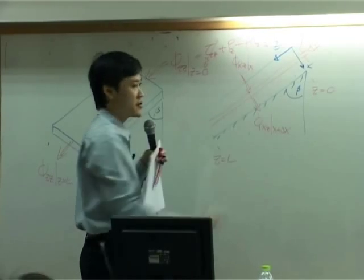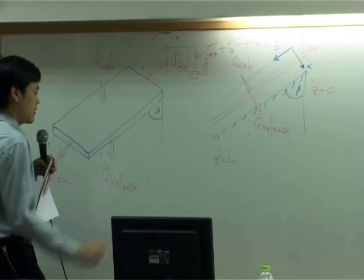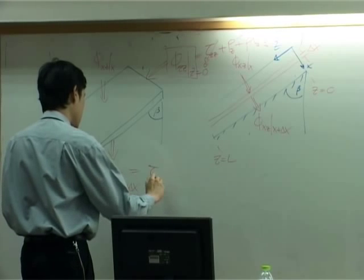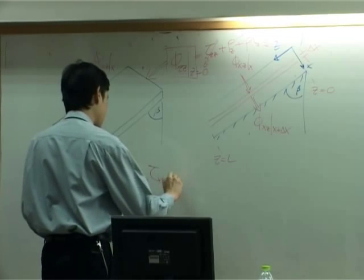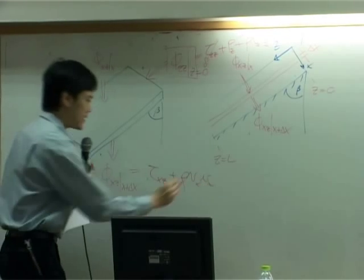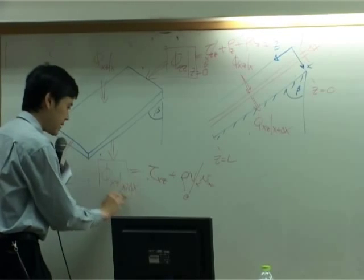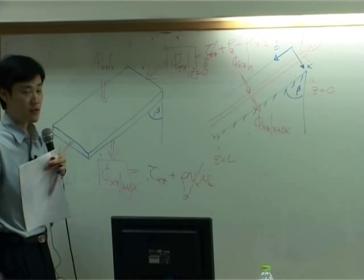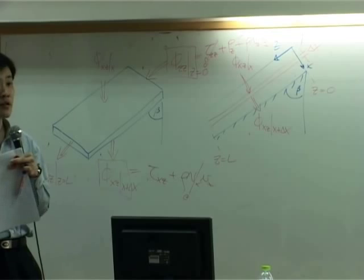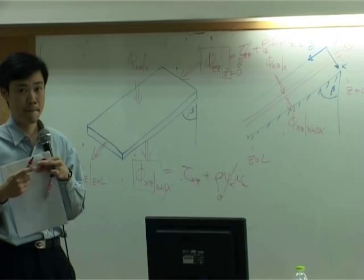For phi_xz, by definition it is equal to tau_xz plus rho*vx*vz. This term is zero but this term is not zero, so therefore this term must be kept as well. So out of nine components of combined flux, there is only two in this example that are not zero.